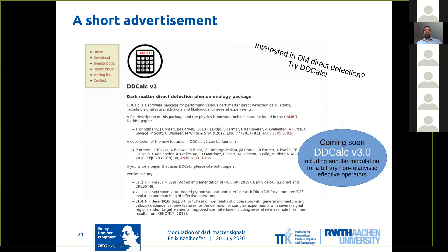I'm almost done — just one slide with a short advertisement before finishing. If you're interested in direct detection, I would suggest you have a look at this software tool that I've been developing together with others, which is essentially for the calculation of dark matter event rates and likelihoods for various particle physics models and various experiments. In the most recent release, we have full support for the general set of non-relativistic effective operators, and we are now working on an update which includes annual modulations for arbitrary interactions and arbitrary dark matter velocity distributions.